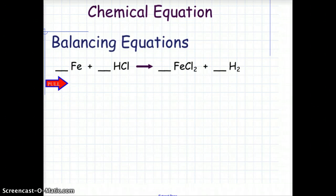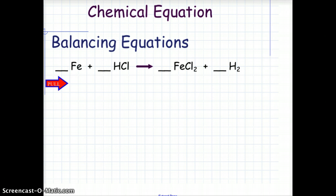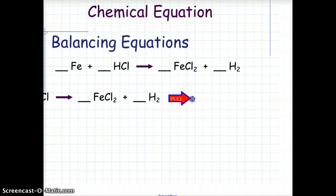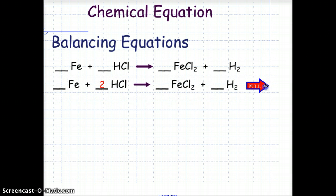Here we have iron plus hydrochloric acid to give us iron chloride and hydrogen gas. Go ahead and turn off the video, try this on your own, and when you have a balanced chemical equation, turn the video back on and check how you did. To balance this, we place a coefficient of 2 in front of the hydrochloric acid. This balances the 2 chlorine and the 2 hydrogen on the product side.